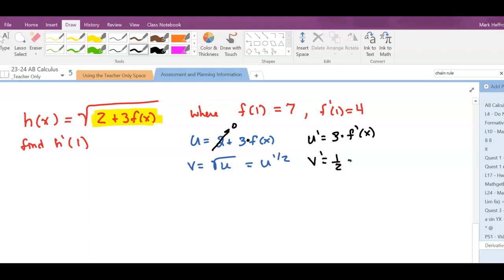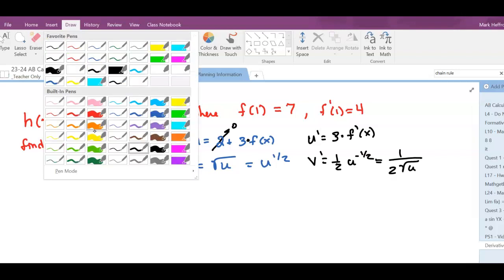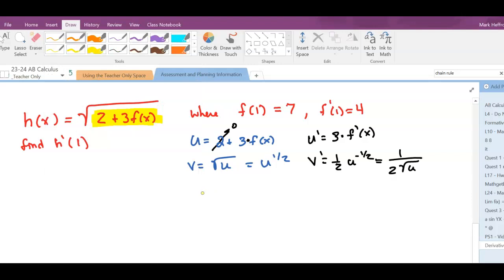One-half, u to the negative one-half, or 1 over 2 square root of u. And I'll multiply these two together, as is our chain rule.